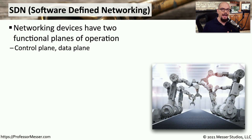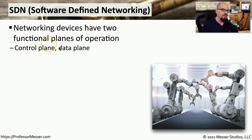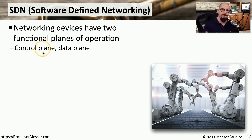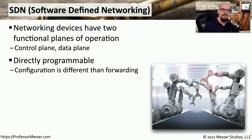We can not only deploy application instances with this same type of infrastructure as code, we can perform a similar function with our infrastructure devices. This would be SDN, or software-defined networking. With SDN, we are separating the functionality of our networking devices into two planes of operation. One of these is the control plane, which handles the management and ongoing configuration of the device. And the data plane is the part of the device that handles the actual operation. For example, on a router, you might have a control plane that allows you to configure the router and set up routing tables, and then you would have the data plane, which performs the actual router forwarding.